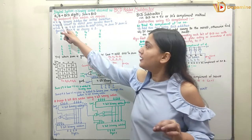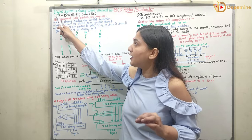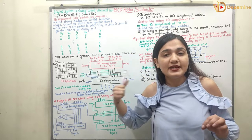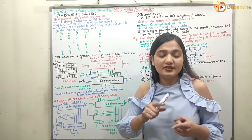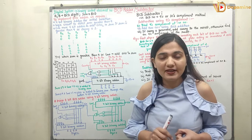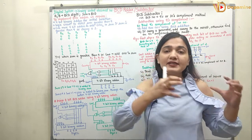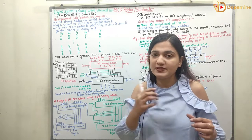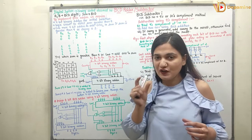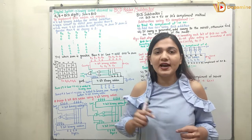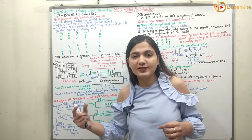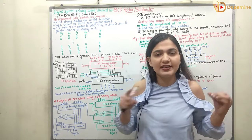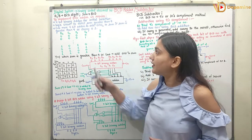So now, if I have two input numbers A and B, in the BCD adder these A and B must be BCD numbers, and the sum that is produced should also be a BCD number. This is the logic of the BCD adder: the inputs are BCD and the output is again a BCD number.